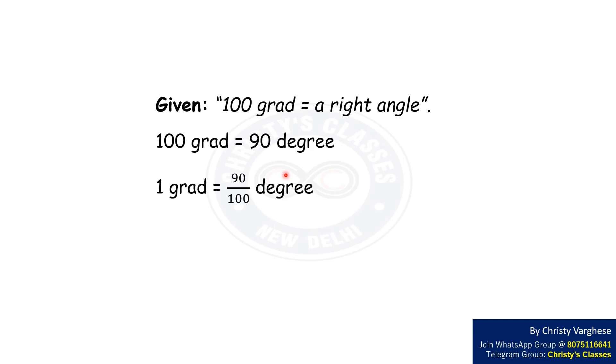It is also given that 100 grad equals a right angle. That is, 100 grad equals 90 degrees. This implies 1 grad equals 90 by 100 degrees. That is, 1 grad is only 90 percent of 1 degree. Hence, g is less than d. Let this be inequality 2.